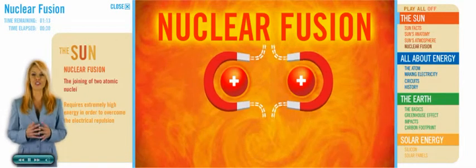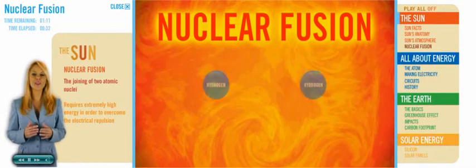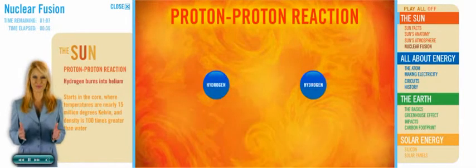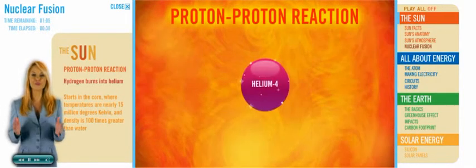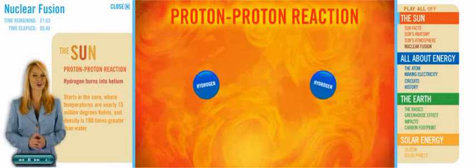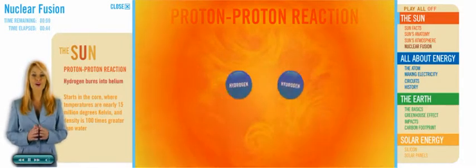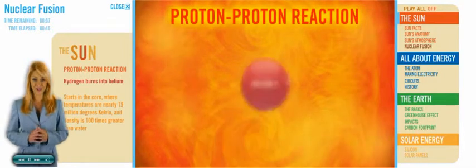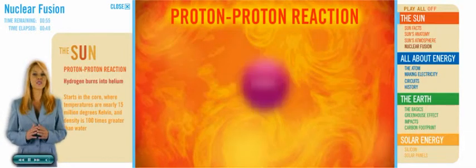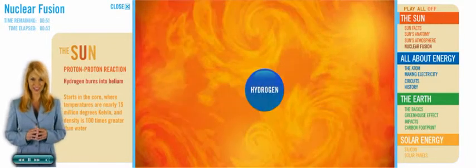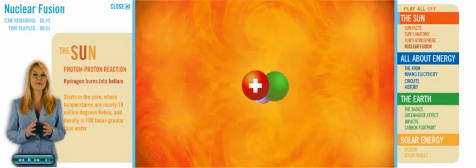Most of the energy created by the Sun is generated during a sequence of reactions, where hydrogen burns into helium. This is called the proton-proton reaction. It all starts in the core, where, remember, temperatures are somewhere in the neighborhood of 15 million degrees Kelvin, and density is 100 times greater than the density of water on Earth.